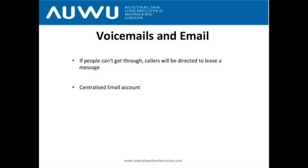Finally, the advocacy email. All concerns and questions around people's rights and advocacy are sent into one centralised email account. You simply log in to that account and send mail from an unemployedworkersunion.com email address, which we can assign to you. We give you the login and you can start looking at emails, research them, and respond as needed. Once you respond, you drag the email over into your file.